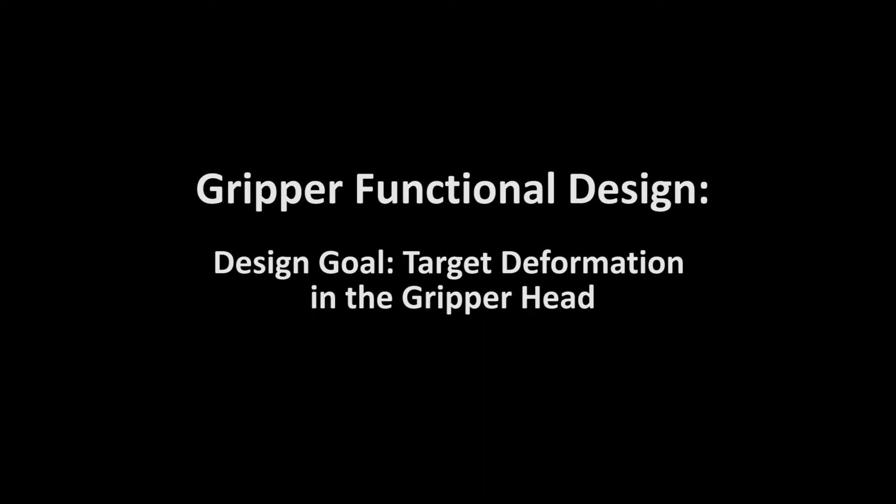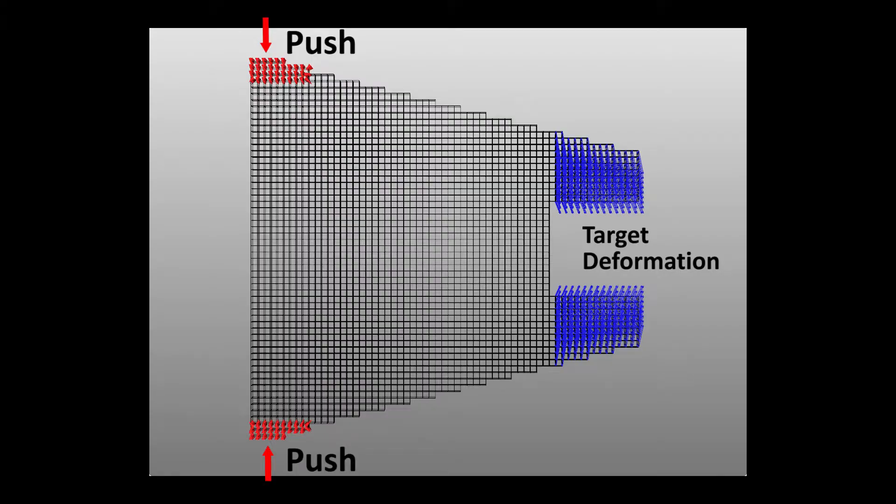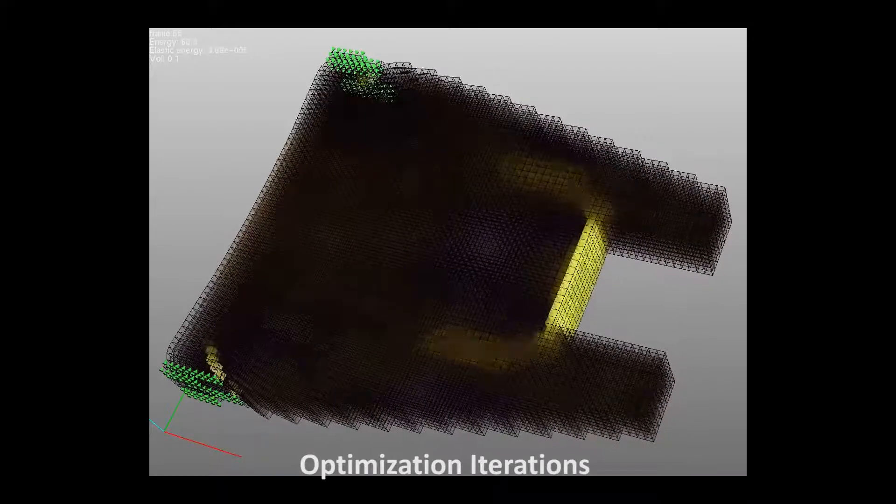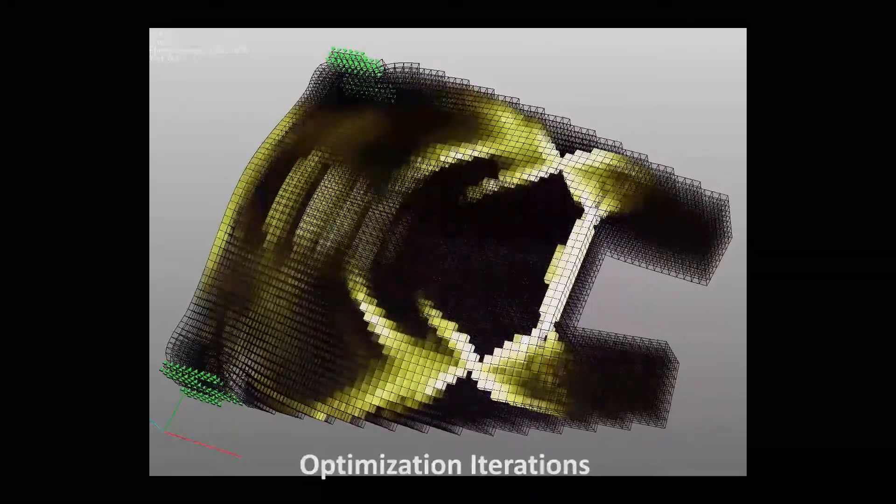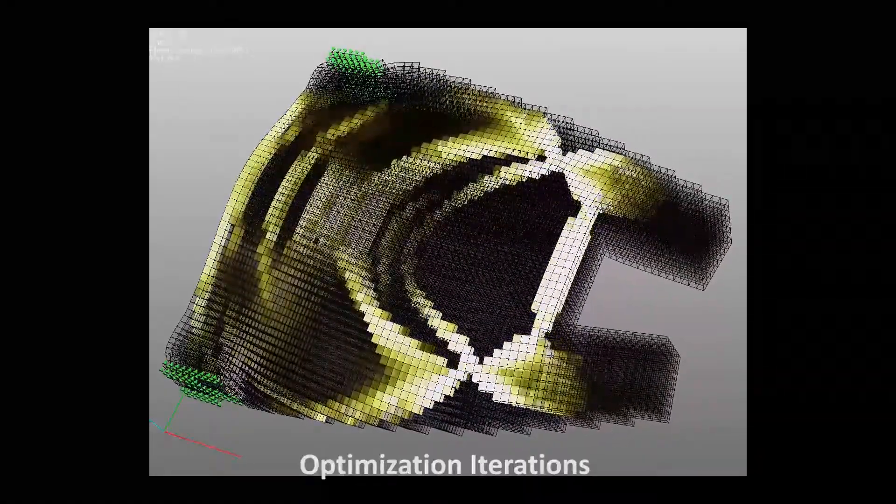We design and fabricate two grippers that can be used to grasp objects when the extremities of the gripper are pressed. We run our algorithm to achieve the optimized material distribution for the target deformation of the head of the gripper.